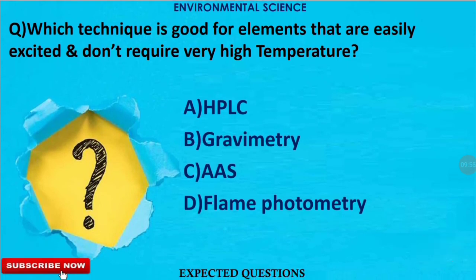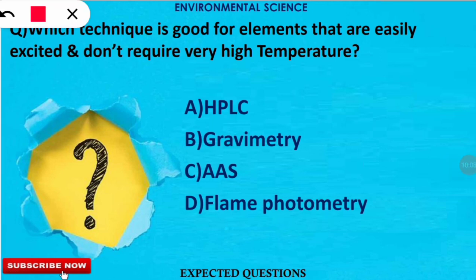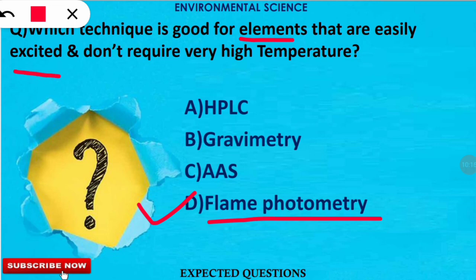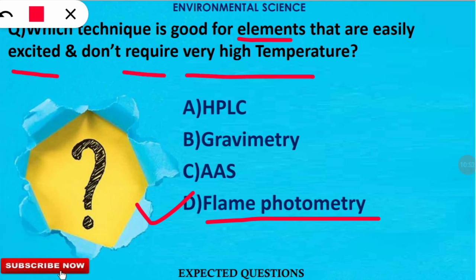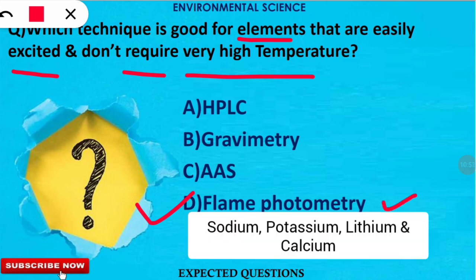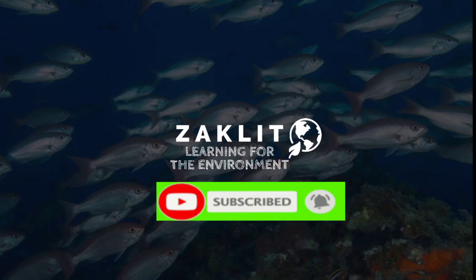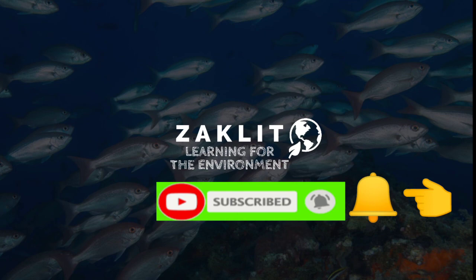The next question is: which technique is suitable for elements that are easily excited and do not require very high temperature? The correct option is D — flame photometry. Elements which are easily excited and analyzed by flame photometry include sodium, potassium, lithium, and calcium. That's all for this video. Don't forget to like, share, and subscribe to the channel. Stay tuned for further updates.